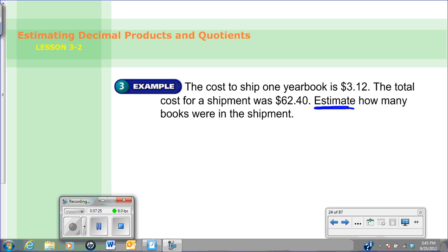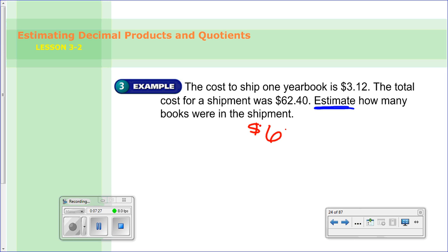Alright, so to answer this problem, we know that it's $62.40. And we'd end up dividing by $3.12 if we wanted the exact answer. But we don't want the exact. We want an estimate. So we're going to go ahead and round. Let's see. And $62.40. Well, let's see. I think we could round this too. Well, I think $63 goes into it. So I'm going to do $63 divided by $3. Because those are compatible numbers.